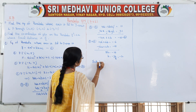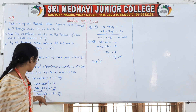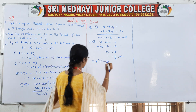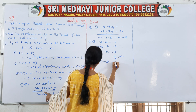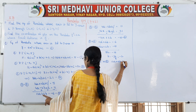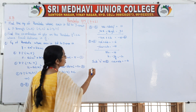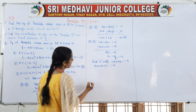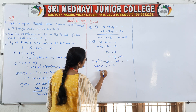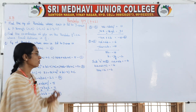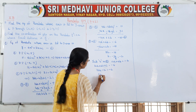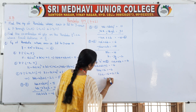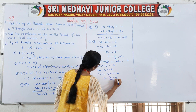Substitute b = -2 into the fifth equation: 12a + 6b = -6. So 12a + 6(-2) = -6, which gives 12a - 12 = -6. Therefore 12a = -6 + 12 = 6, so a = 6/12 = 1/2.